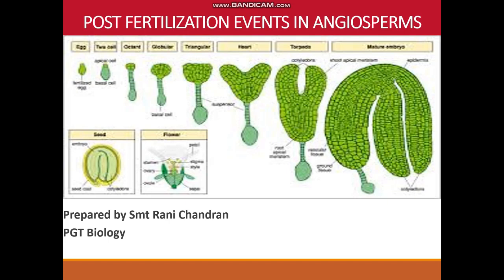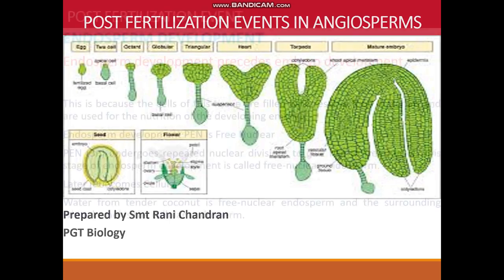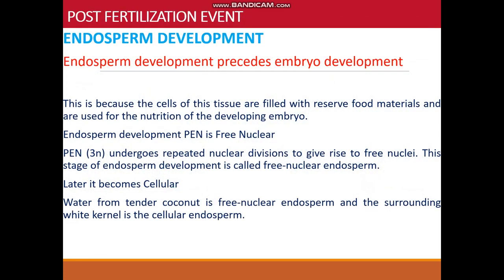Initially, the endosperm development is free nuclear — only later does cell wall formation take place. For example, the water from tender coconut is free nuclear endosperm, whereas the white kernel is a cellular endosperm.